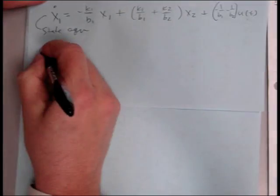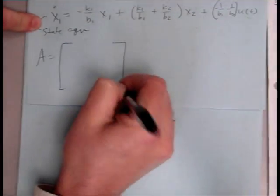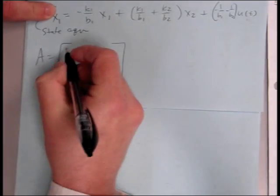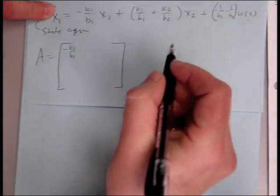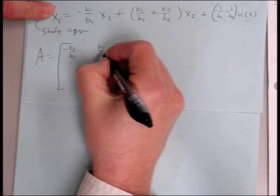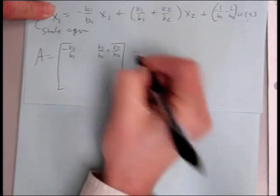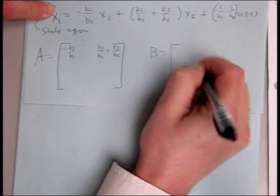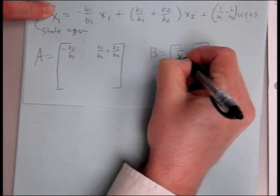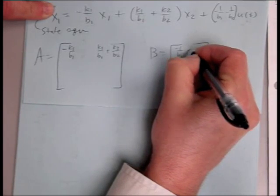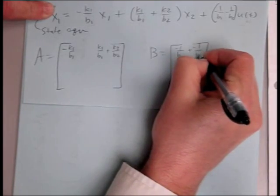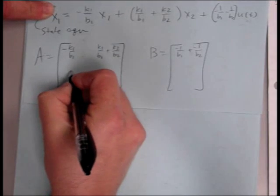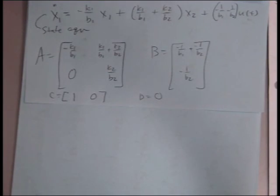So our A matrix then: x1 coefficient of x1 is negative k1 over b1, x2 is k1 over b1 plus k2 over b2. Our b coefficient of u, negative 1 over b1 plus negative 1 over b2. And then our x2 equation. But I think once you've got that, then you can go ahead and do your controllability observability criterion on your own, and this should give you a good starting point.